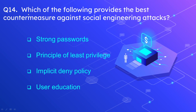Question number 14: Which of the following provides the best countermeasure against social engineering? The options are strong password, principle of least privilege, implicit deny policy, and user education. The correct option is user education. Social engineering attacks are done by luring users through certain techniques, and this type of attack can be prevented by educating users about cybersecurity and these attacks.